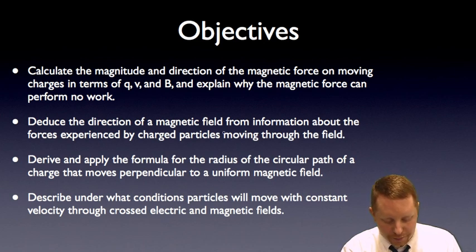Secondly, deduce the direction of a magnetic field from information about the forces experienced by charged particles moving through the field, derive and apply the formula for the radius of the circular path of a charge that moves perpendicular to a uniform magnetic field, and finally, to describe under what conditions particles will move with constant velocity through crossed magnetic and electric fields.